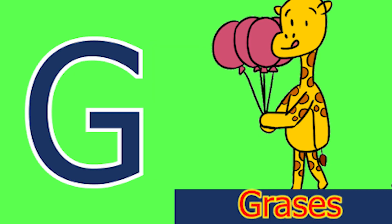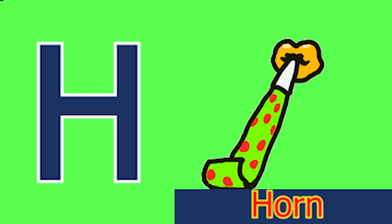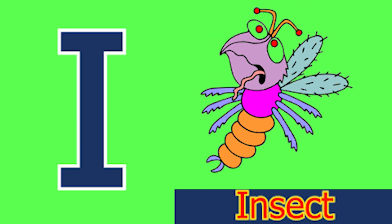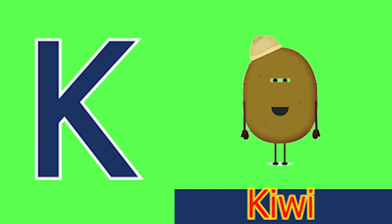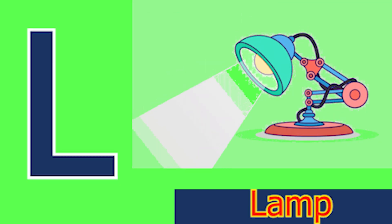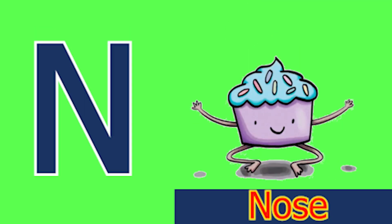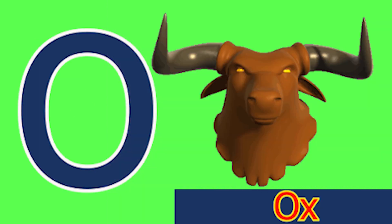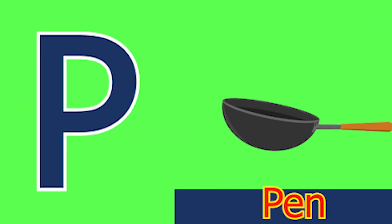G for glass and H for horn. I for insect, J for jam, K for kite, L for lamb, M for mud, N for nose, O for ox and P for pan.